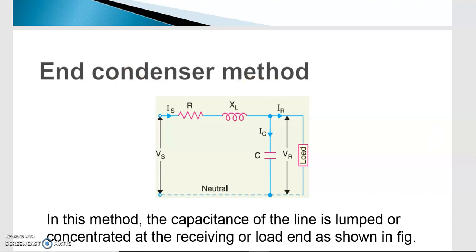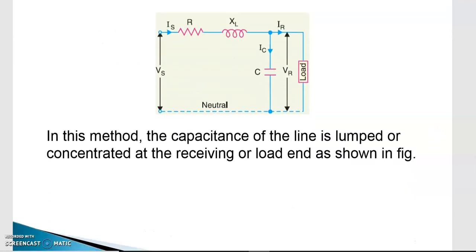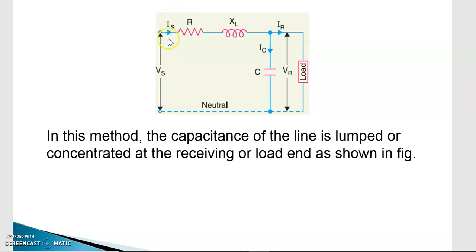In the end condenser method, the capacitance is placed closer to the load — it is lumped at the receiving end or near the load end. Vs is the sending end voltage, Vr is the receiving end voltage, IR is the load current, and IS is the sending end current. There are two currents because the shunt capacitance is now coming into the picture, so IS and IR are different.